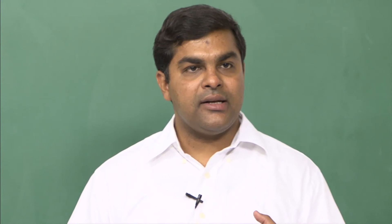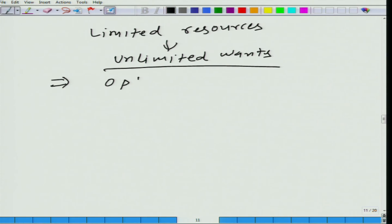Then, given the availability of resources, you would satisfy the wants which have higher priority than others. That is why you have optimization.